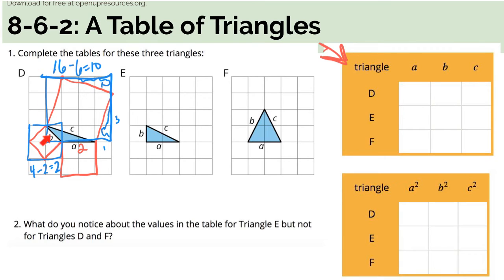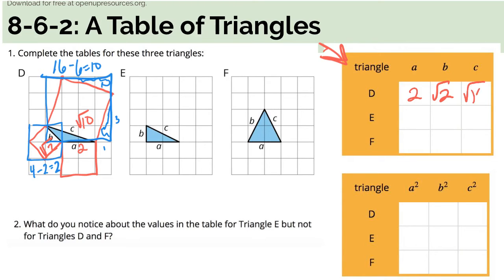For side C, I drew this big square — that one has an area of 16. I subtract off 6 for all the triangles around the outside. That gives me an area of 10 for the tilted square, which means the side length of C would be the square root of 10. Down here, the big square has an area of 4, subtract off 2 for the corners, and my area would be 2, which means the side length for B is the square root of 2. So I'll fill those in.